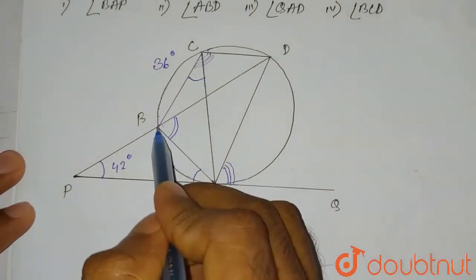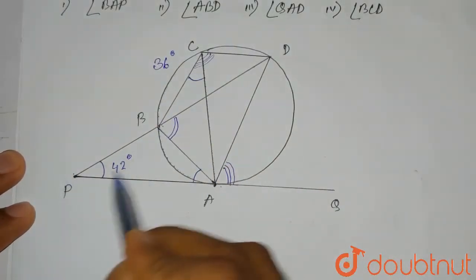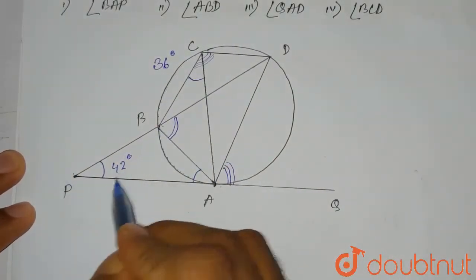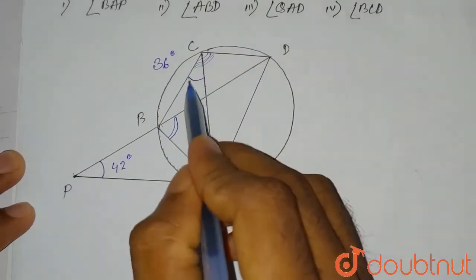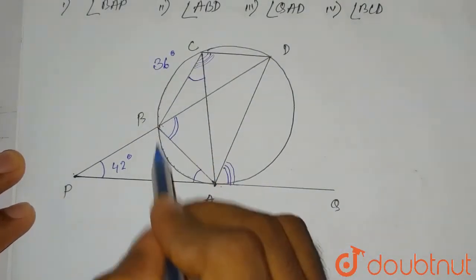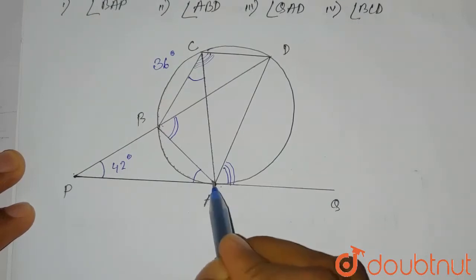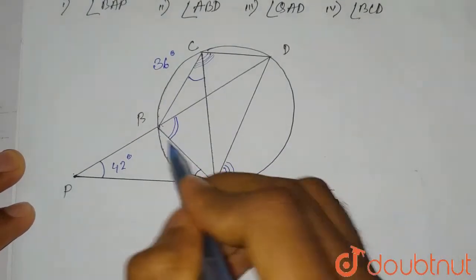So here is our diagram where angle BPA or APB is given to be 42 degrees and angle BCA is 36 degrees. Now if we look at the diagram, we can see that AP is the tangent and AB is the chord.